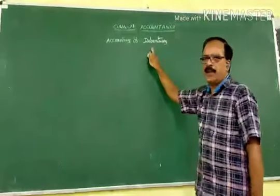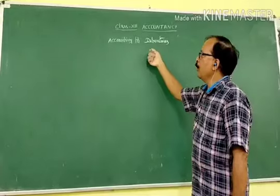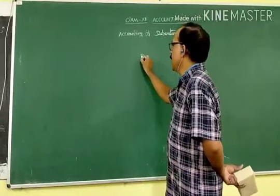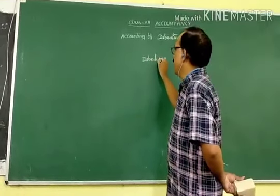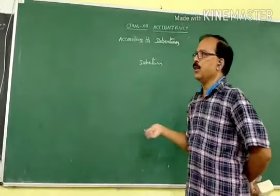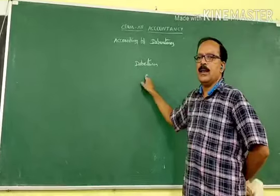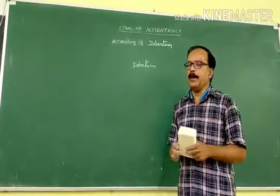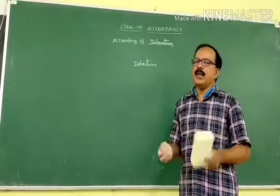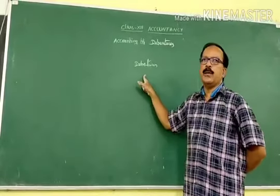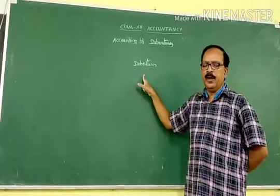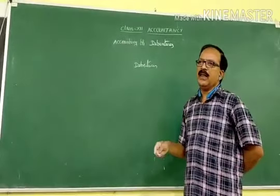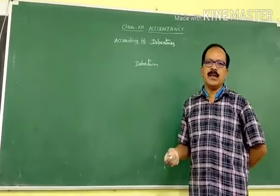This is accounting for debentures. Before going to the accounting for debentures, it is required to know the meaning of a debenture. Debenture means it is a written instrument — one kind of instrument issued by the company. Suppose the company wants to get some loan from the public; after getting the loan, the company gives a receipt, and that receipt is simply called a debenture.